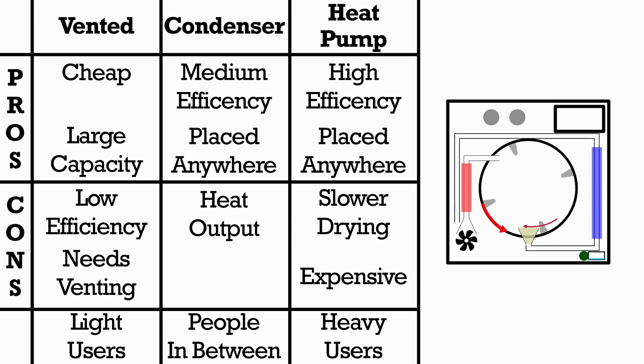Condenser dryers are more energy efficient than vented dryers as the air keeps some of its heat when it's reused, meaning they are cheaper to run. They have quick drying times and they are cheaper than heat pump dryers. These dryers can be placed anywhere inside your house as they don't need venting. However, they will warm up the room that they are in.